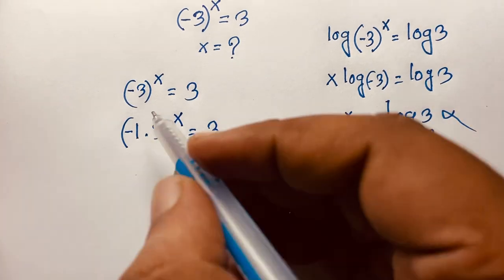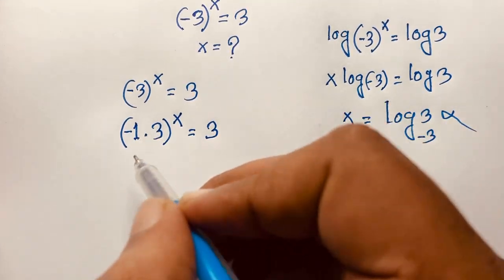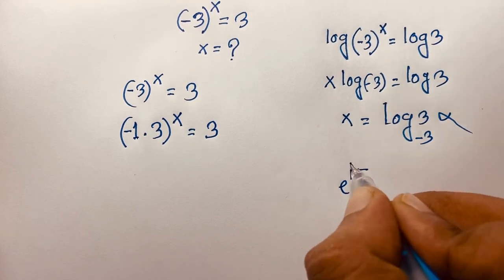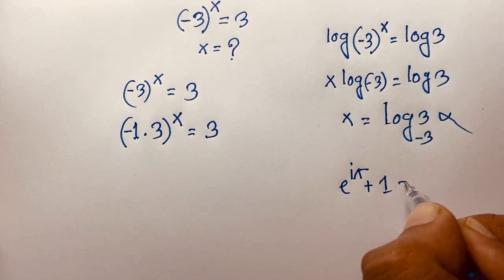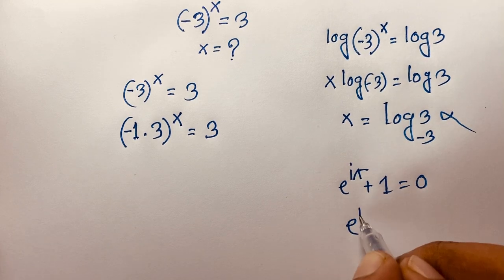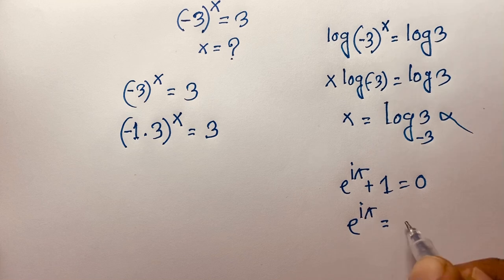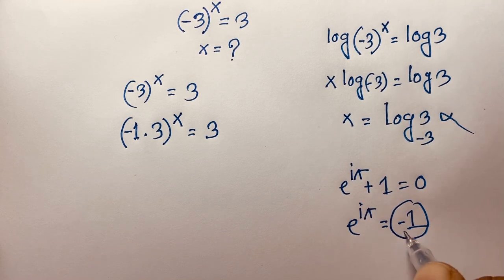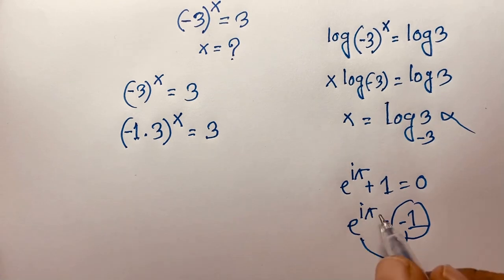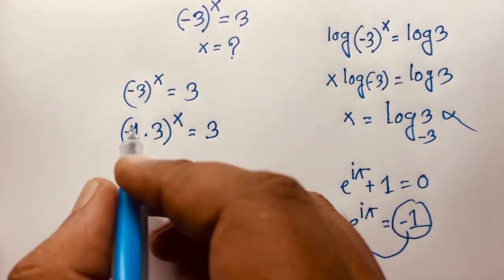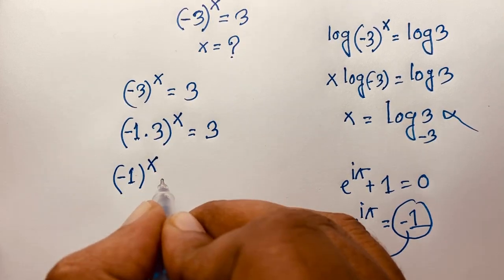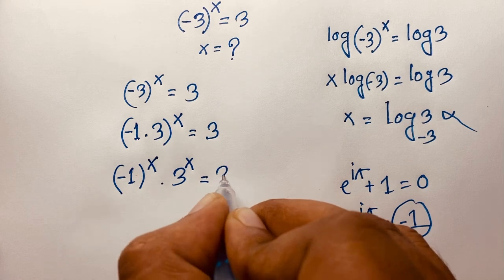Now, one of the tools here is Euler's identity: e to the power of iπ plus 1 is equal to 0. Following this identity, we can say e to the power of iπ is equal to negative 1. So negative 1 equals e to the power of iπ. Substituting, we get e to the power of iπ, times 3, all to the power of x, equals 3. We can then write this as minus 1 to the power of x times 3 to the power of x is equal to 3.